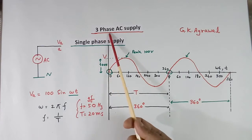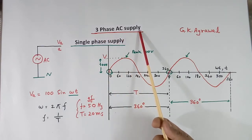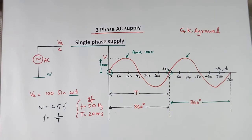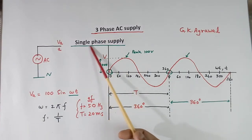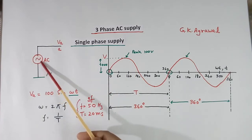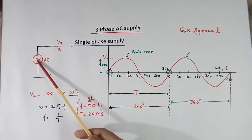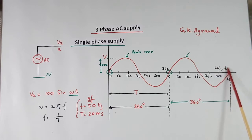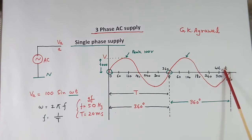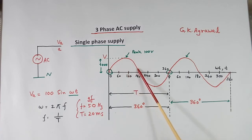Today we will discuss 3-phase AC power supply. Before we discuss 3-phase, we will discuss single phase supply. This is the symbol of single phase, which means AC. Here I have plotted voltage versus time or theta, where T means time and omega means theta. This can be either time or theta. This is the equation of this sinusoidal wave or AC single phase.